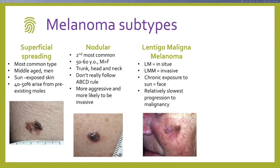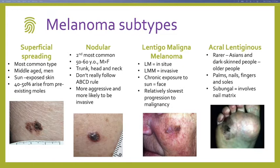Lentigo maligna is the in-situ phase of lentigo maligna melanoma. LMMs can stay in the in-situ phase for decades with very low implications for long-term prognosis. They present over the face as large patchy areas, with very slow progression to malignancy compared to nodular melanomas which can arise and become invasive within months. The final subtype is acral lentiginous melanoma, most common in Asians and people of colour, presenting over the palms, soles, nails and fingers. If it involves the nail matrix, it's called a subungual melanoma.